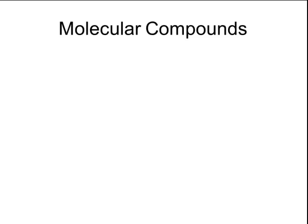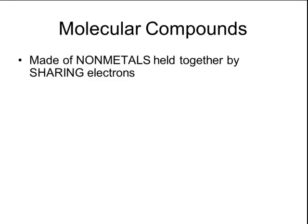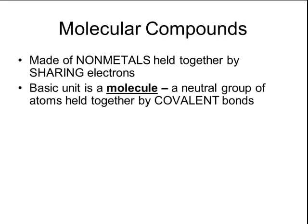When elements combine together to form compounds, one type of compound is called a molecular compound. A molecular compound is made of nonmetals that are held together by sharing electrons. The basic unit of a molecular compound is a molecule, and a molecule is a neutral group of atoms that are held together by covalent bonds.